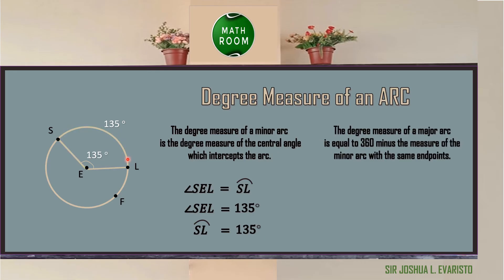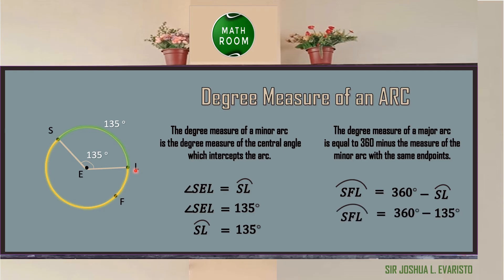Moreover, the degree measure of a major arc is equal to 360 degrees minus the measure of the minor arc with the same endpoints. So to find the measurement of the major arc SL, we subtract 135 degrees from 360 degrees. 360 degrees minus 135 degrees gives us 225 degrees, and that is the measurement of the major arc.